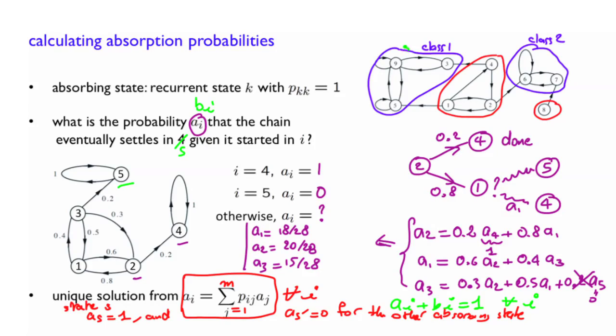So think about this class, for example, as being one big state, an absorbing state, and now forget about the inside, and calculate the probability that you end up in this class as the probability of reaching this absorbing state given that you started in 1, 2, and 4, and you do the same kind of calculation.